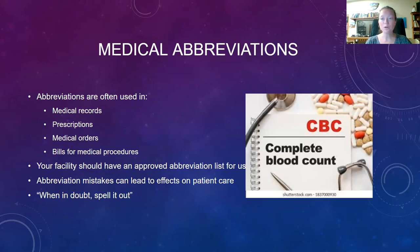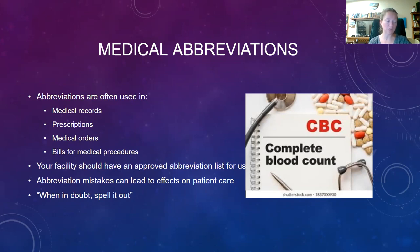Medical abbreviations are used to be more efficient with both our time and space — in the medical record, documentation, and communication. Phlebotomists need to be able to recognize common abbreviations and symbols related to specimens and various lab tests. The Joint Commission and the Institute for Safe Medication Practices have a list of abbreviations that should not be used, due to the risk of misinterpretation and resulting errors. Your facility will have a list of approved abbreviations — make sure you know those. Abbreviation mistakes can lead to negative effects for our patients, so when in doubt, spell it out.